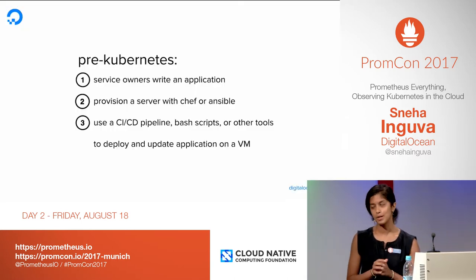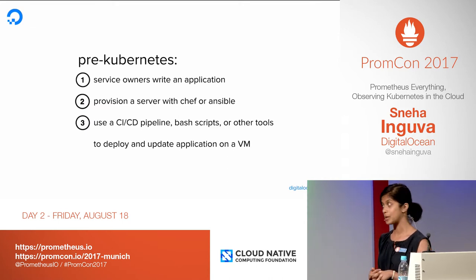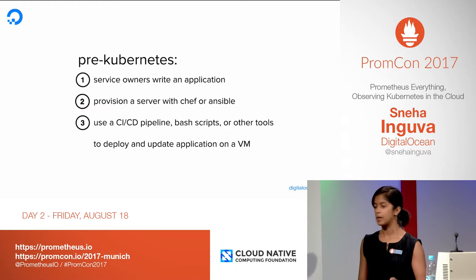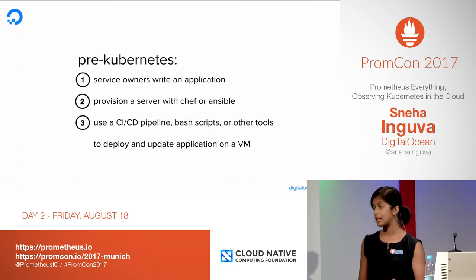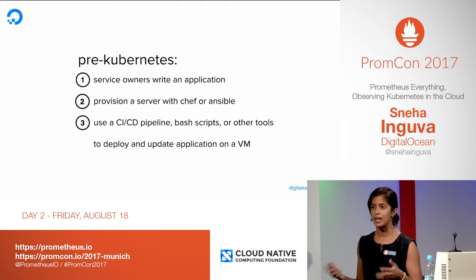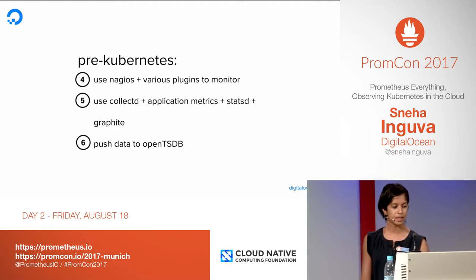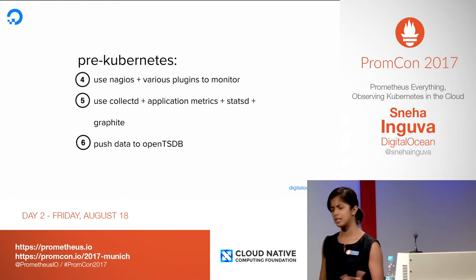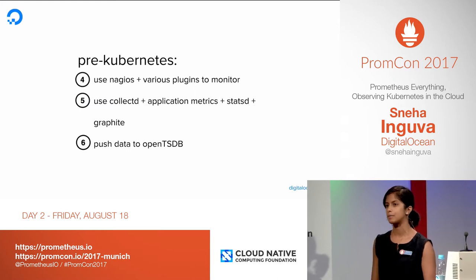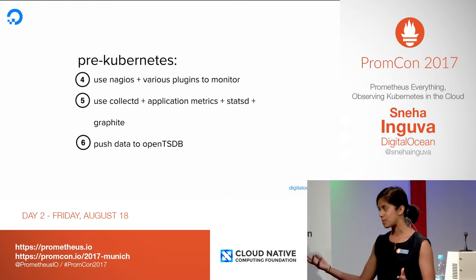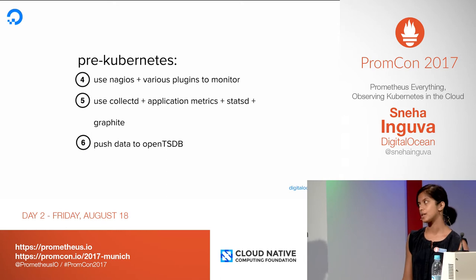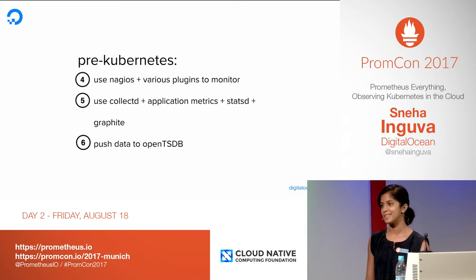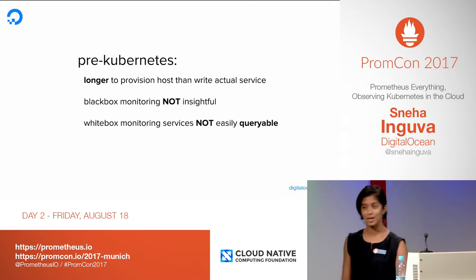In the pre-Kubernetes world, a service owner would write an application in Go or Rails or whatnot, provision a server using Chef or Ansible, use a CI pipeline with Bash scripts, and then deploy and update their application as needed. For monitoring, we had Nodios for host monitoring, which didn't provide much introspection into your actual application. People also heavily used CollectD, StatsD, and maybe pushed stuff to Graphite. There was also an OpenTSDB cluster at some point.